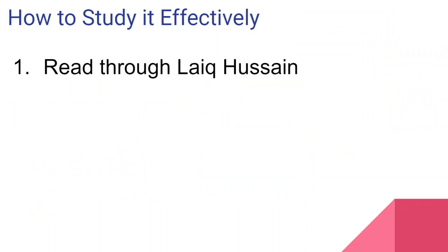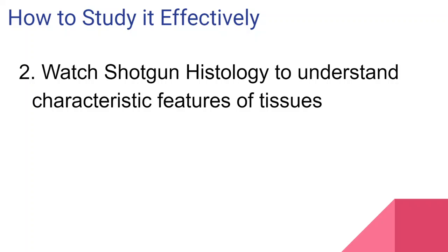As for how to study effectively: the first thing I would do is read through Hussein — give it a short read. Only about five percent of that information will be retained, but it preps your brain for identifying different slides under a microscope. Then I'd either watch Shotgun Histology or search up different slides on Google. I advise students not to rely solely on the textbook and to really use all the resources they have on hand — YouTube, Google, everything.